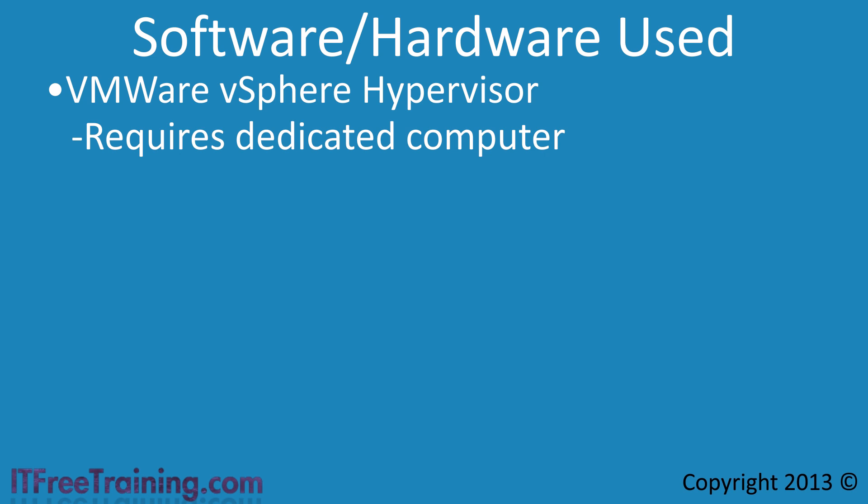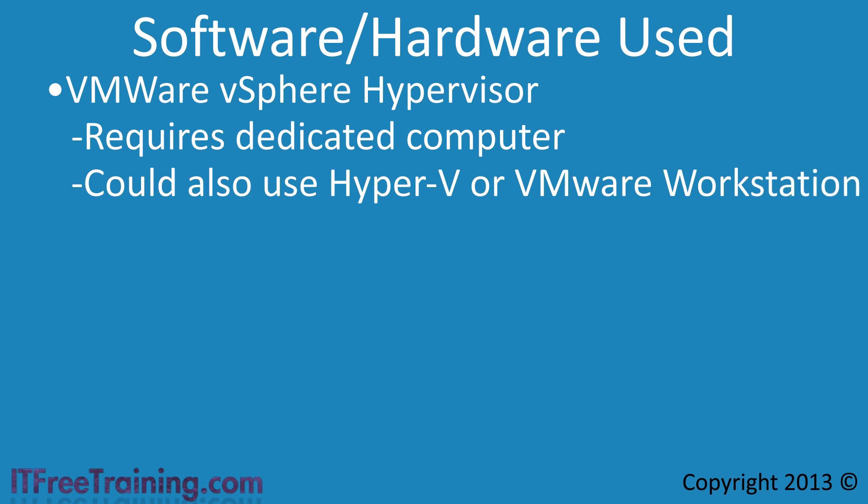You could also use the instructions in these videos and perform the install on other virtualization solutions like Hyper-V or VMware Workstation. The important point to remember if you use a different virtualization solution is that it supports the number of networks that you are planning to have configured on the virtual machine. The router that we will configure in this series of videos uses 10 virtual network adapters.